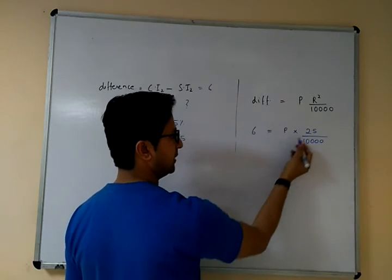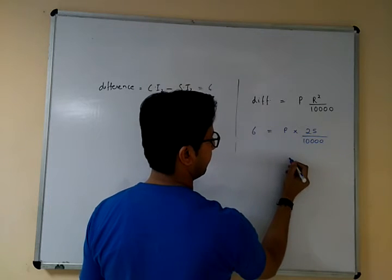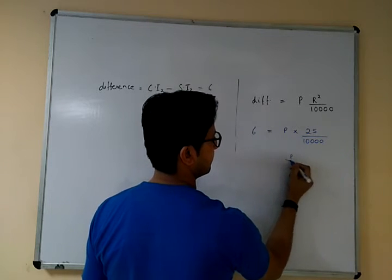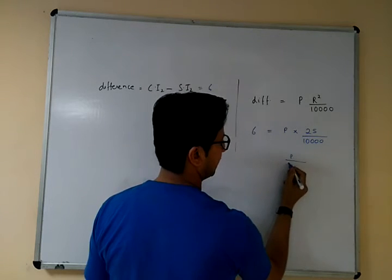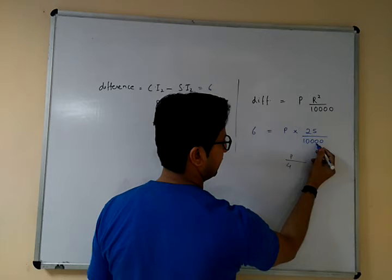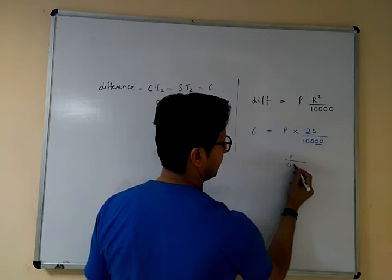Let's see what happens. 25 over 10000 simplifies, so 6 equals P times 25 over 10000, giving P equal to 2400.